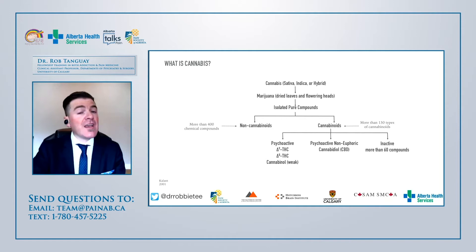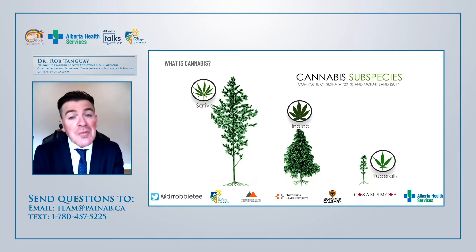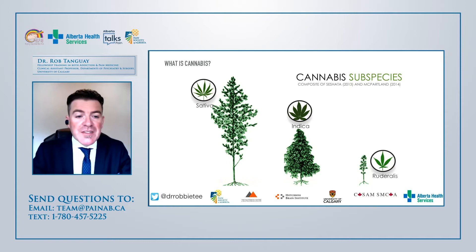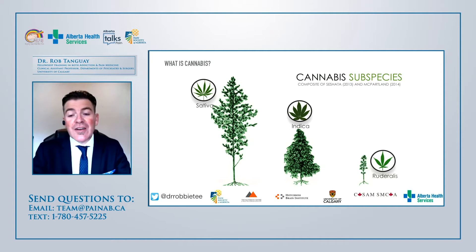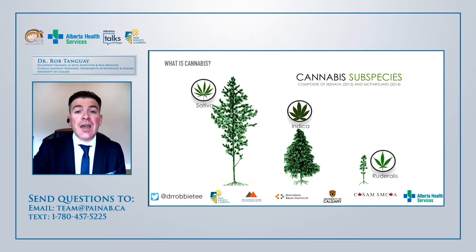We're still learning what these cannabinoids do outside of a petri dish. The theme of this lecture is: we don't know. There's a lot we don't know, but I'll take an anecdotal approach of what I do with patients. There's sativa, which is often quite tall; indica, which is shorter and fatter; and ruderalis, which is kind of just a weed — though we are now seeing some ruderalis plants being cultivated.